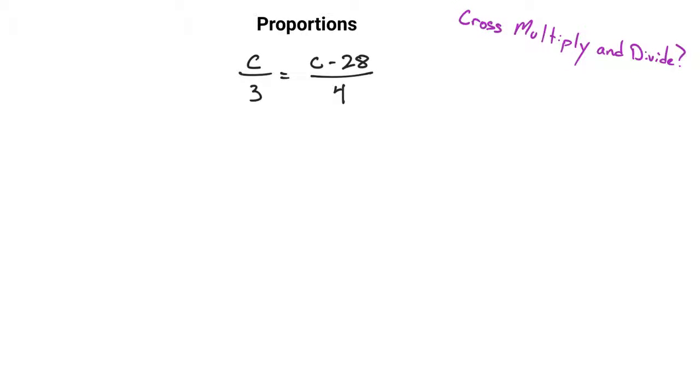A proportion is when you have one fraction set equal to one other fraction. So even though we have multiple terms in the numerator here, it's all being divided by 4, so it still is considered a proportion.